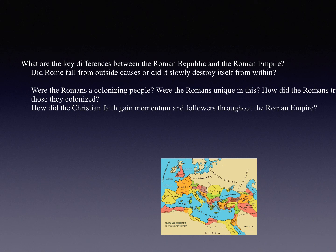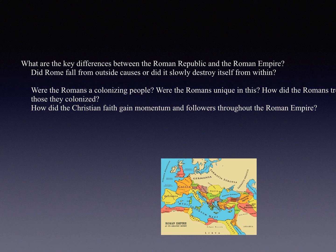And now here is a short mini-lecture on what I think are the key questions of our Chapter 6 reading on ancient Rome. One: what are the key differences between the Roman Republic and the Roman Empire? Two: did Rome fall from outside causes, or did it slowly destroy itself from within? Three: were the Romans a colonizing people, were they unique in this, and how did the Romans treat those they colonized? And finally: how did the Christian faith gain momentum and followers throughout the Roman Empire? Let's take this question by question — a nice overview of the key points of Chapter 6.